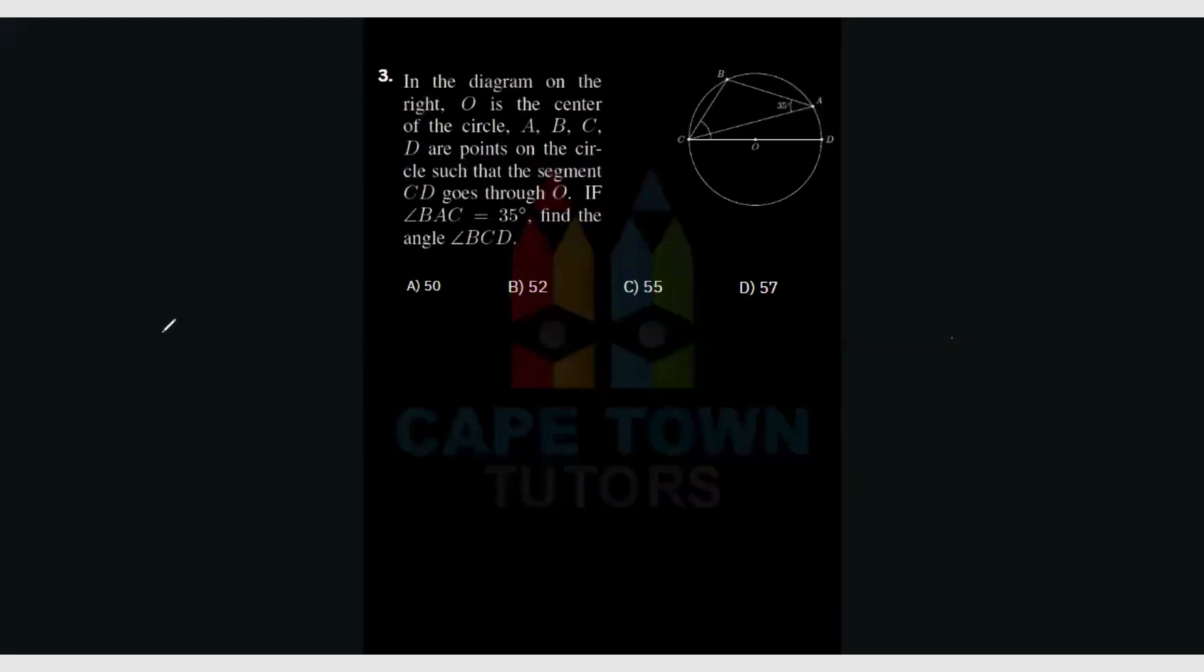Alright guys, the next question says: in the diagram on the right, O is the center of the circle, A, B, C, D are points on the circle such that the segment CD goes through O. If angle BAC is 35 degrees, you can see it's given over there.